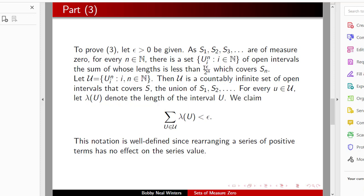Since this is measure zero, we can insist that the sum of the length of these intervals is less than epsilon over two to the nth power, a very carefully chosen small number. Now, let script U be the set of all of these intervals u_i^n. Then U is a countably infinite set of open intervals that covers s, which is the union of s1 through s_n. So script U covers s, which is all of these s_i's together.